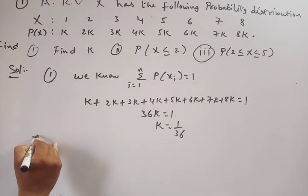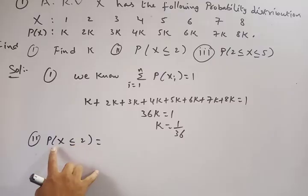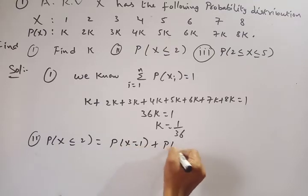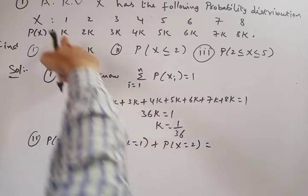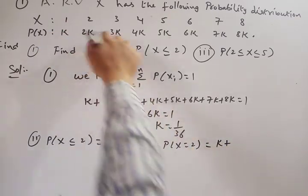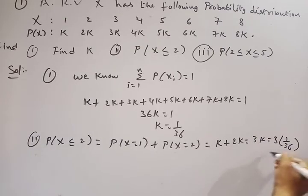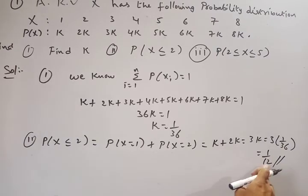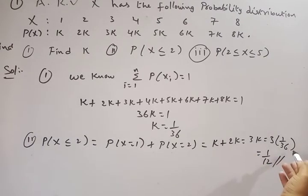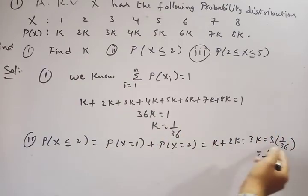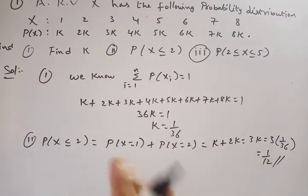Second part: P(X ≤ 2) means the probabilities where X equals 1 and X equals 2. P(X=1) = k and P(X=2) = 2k. So P(X ≤ 2) = k + 2k = 3k = 3 × (1/36) = 1/12. Note: in the previous exam many students incorrectly wrote 1/13, but the correct answer is 1/12.